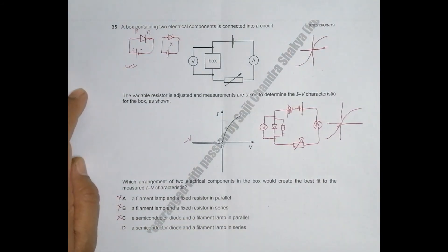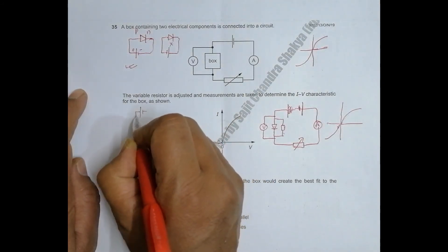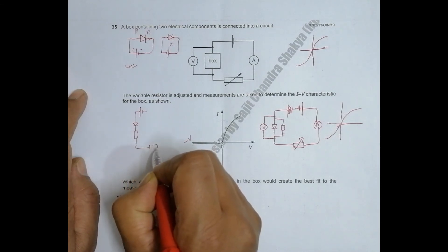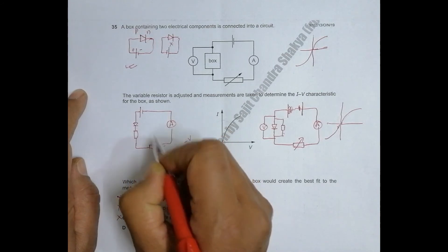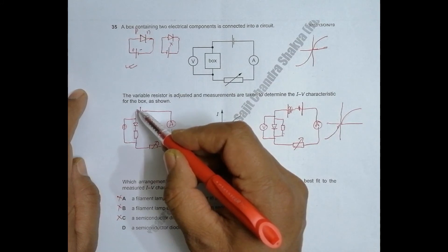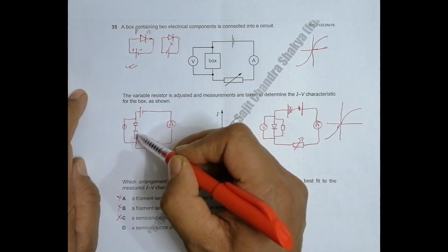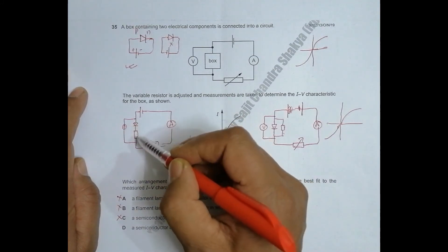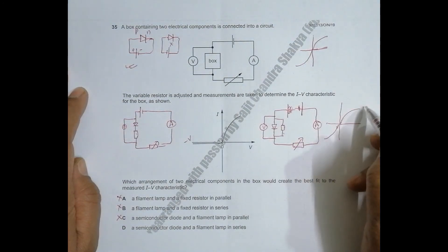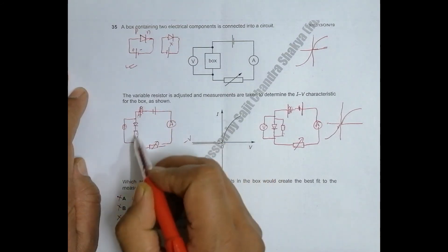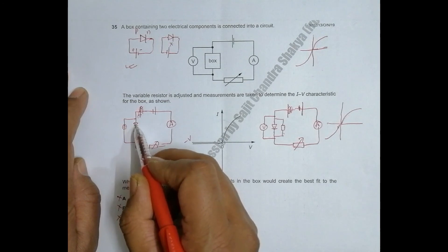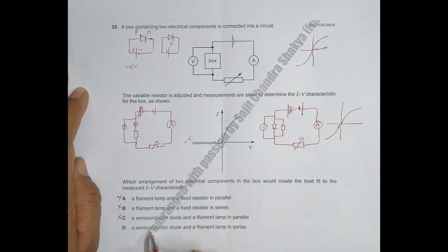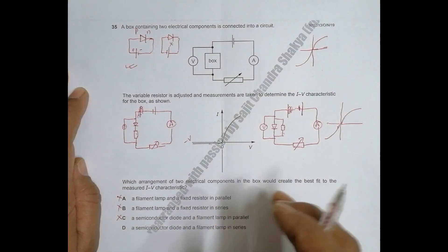The components should be in series. In this series arrangement, the source of voltage connects to a semiconductor diode and a filament resistor in series, with a variable resistor and voltmeter. In the forward connection, the diode allows current to flow through the filament resistor, which has a somewhat variable resistance, producing a curved graph. But when reversed, the diode blocks the current, so no current flows — giving almost zero current. This matches the IV characteristic shown.